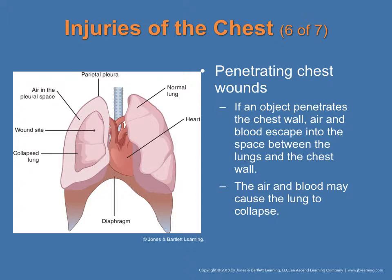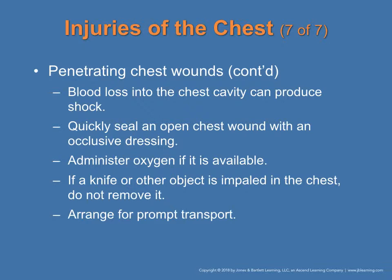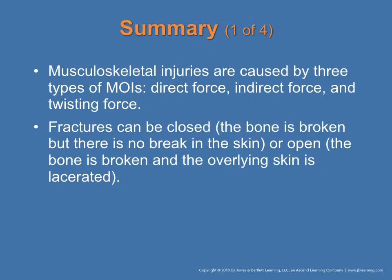In a penetrating chest injury, if an object penetrates the chest wall, air and blood escape into the space between the lung and the chest wall, which may cause the lung to collapse. Blood loss into the chest cavity can produce shock. Quickly seal an open chest wound with a pressure dressing and give oxygen. If there is a knife or impaling object in the chest, do not remove it. Arrange for transport.